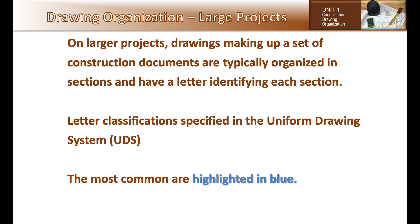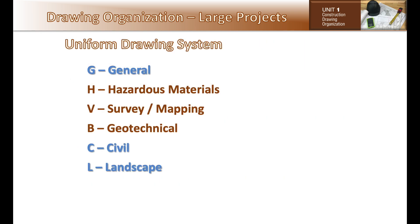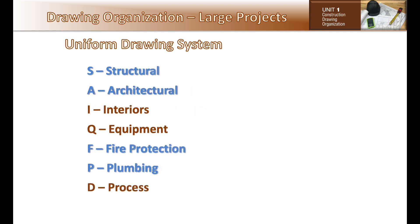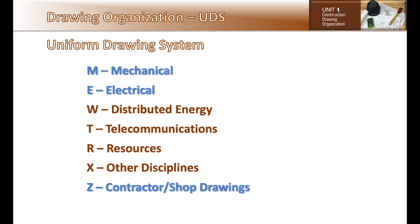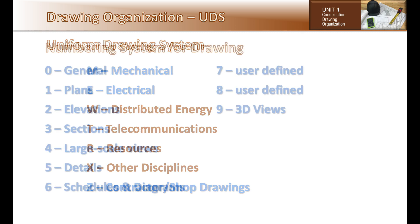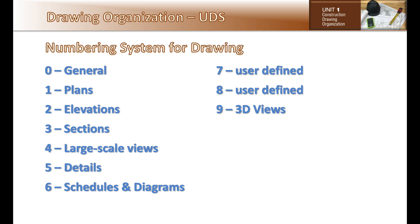The most common letters used are: G for general, C for civil, L for landscape, S for structural, A for architectural, F for fire protection, P for plumbing, M for mechanical, E for electrical, and Z for contractor shop drawings.